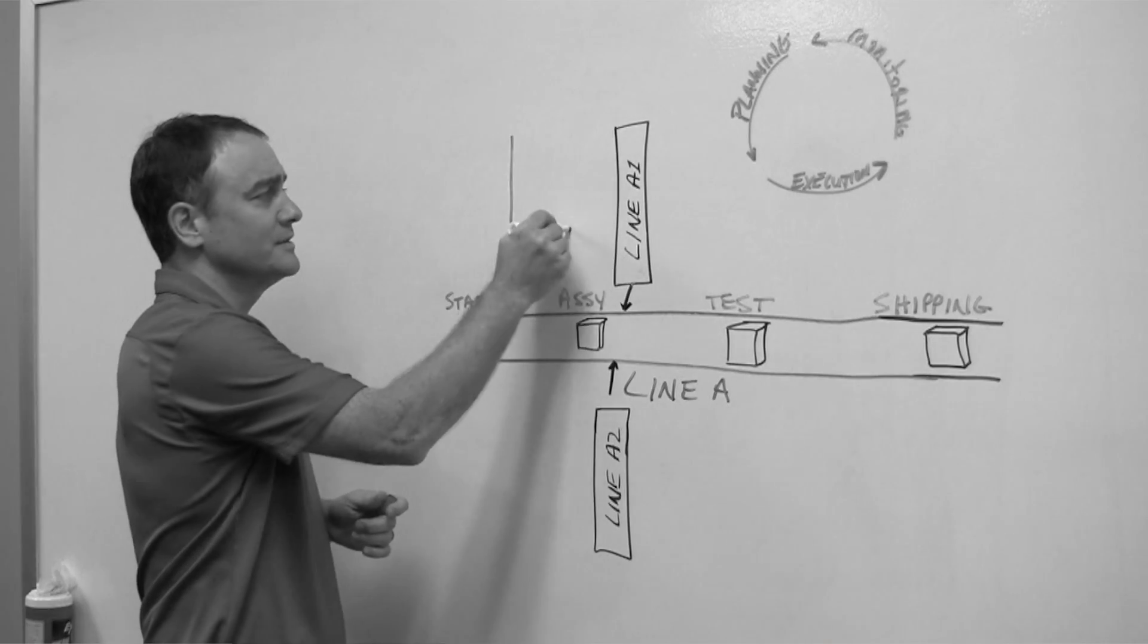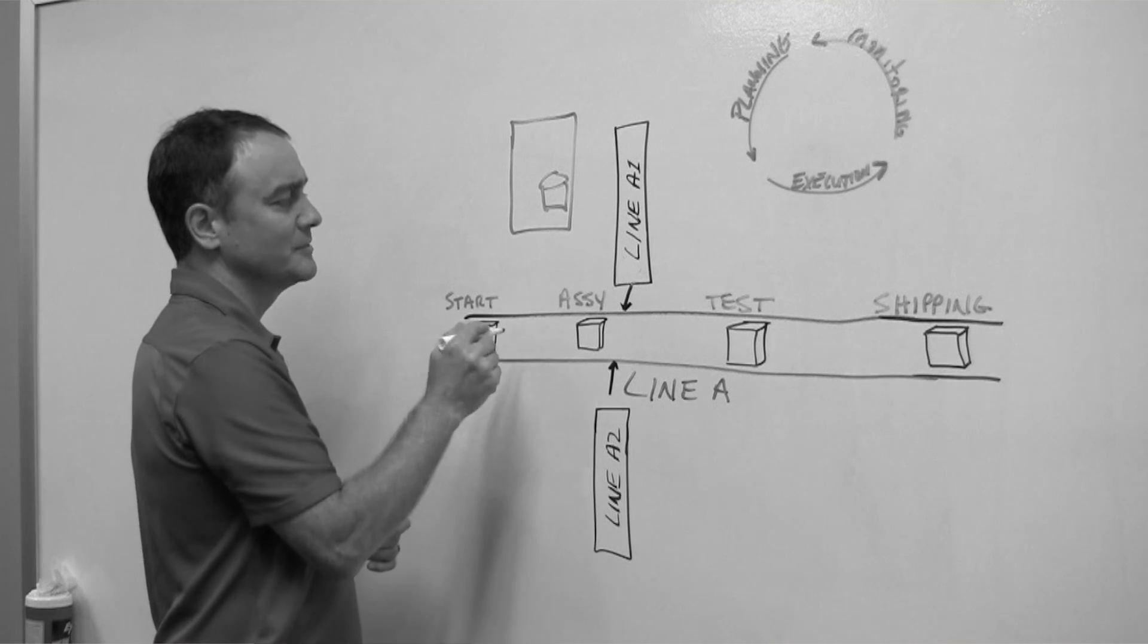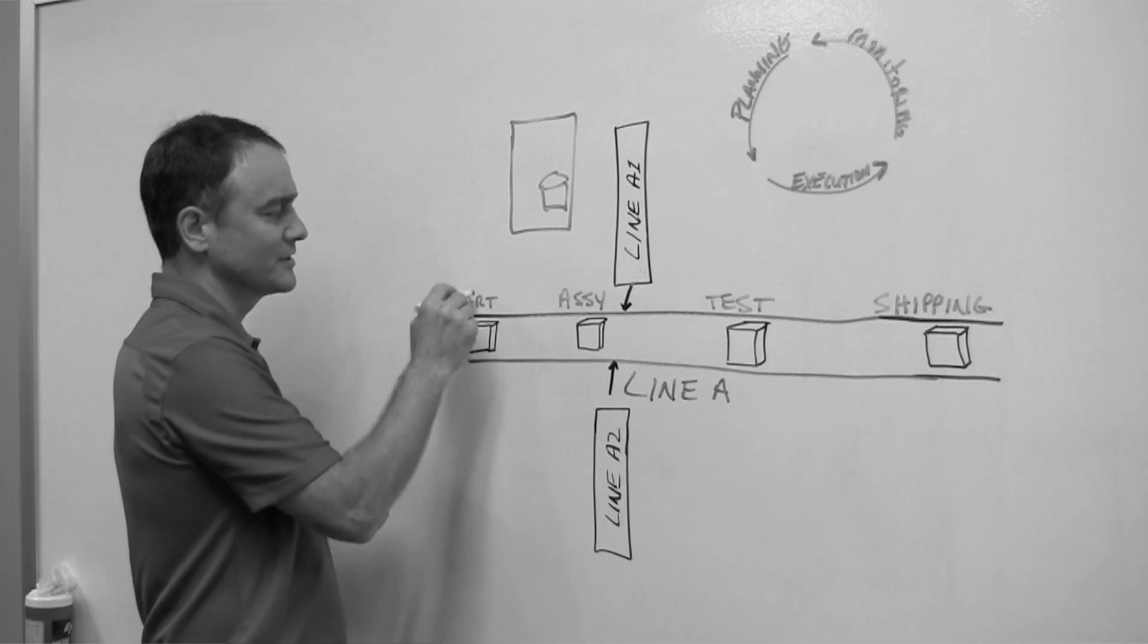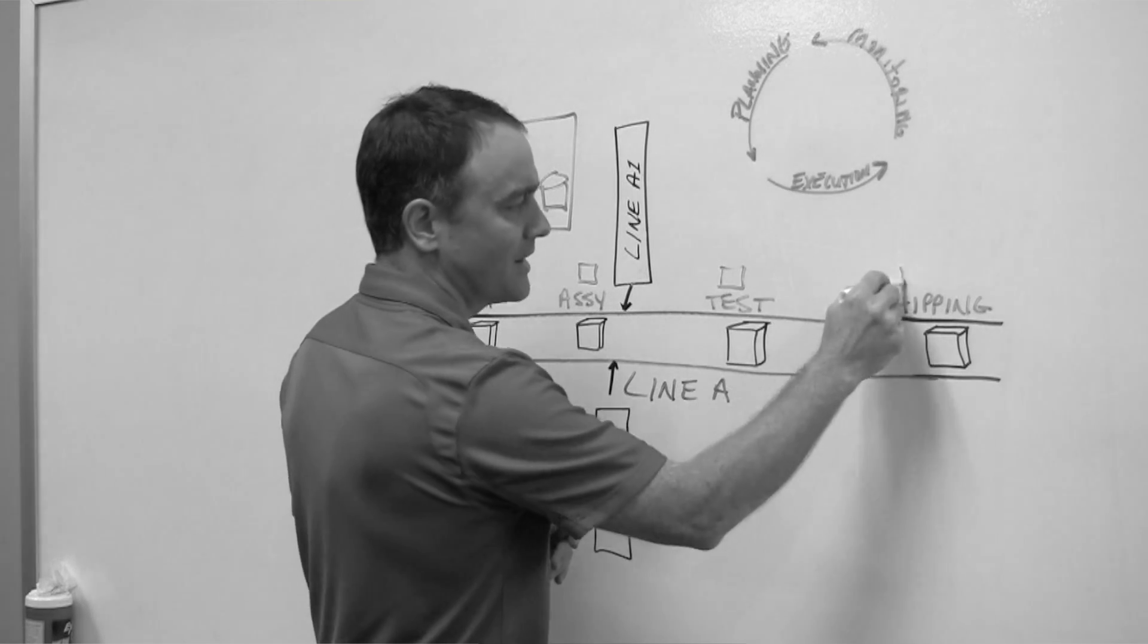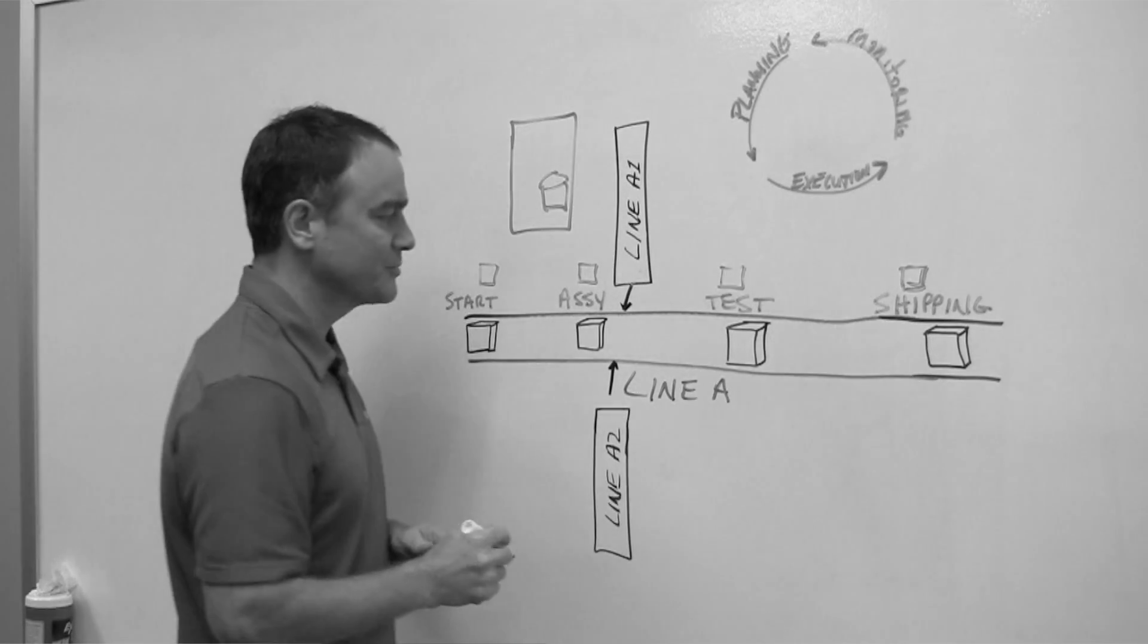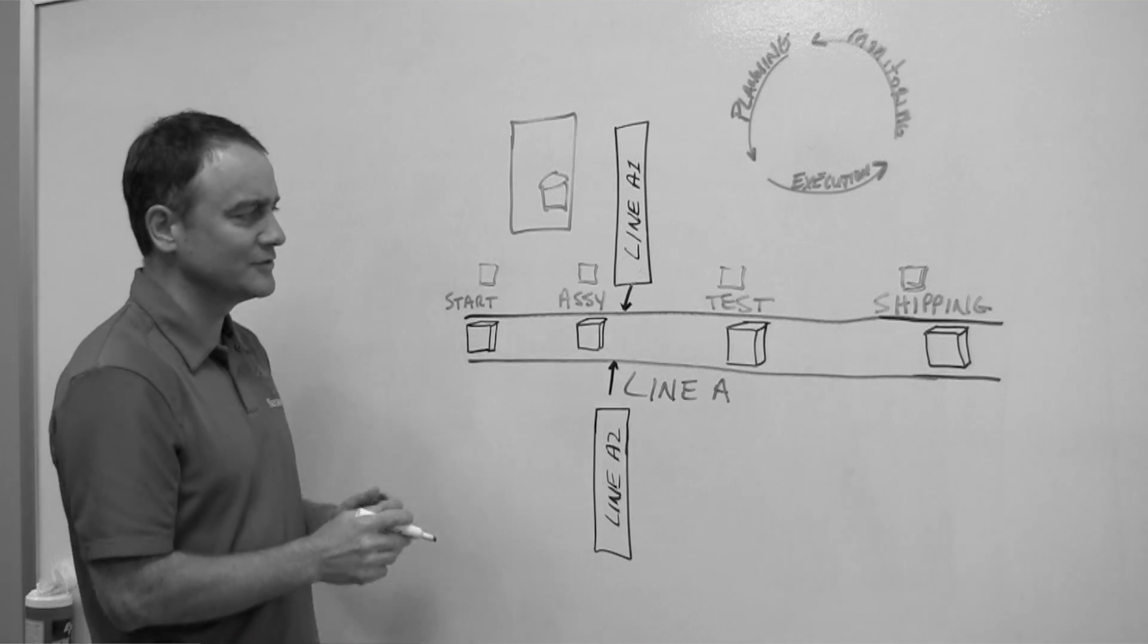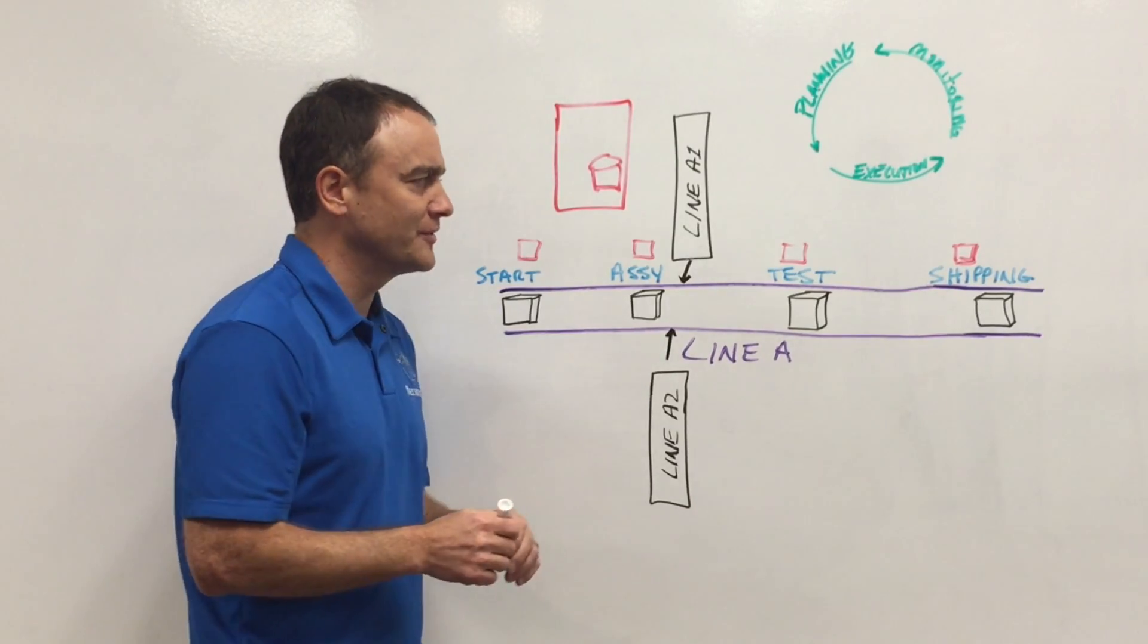So I'm going to draw just a server up here. A server is probably going to have a database in it. It's going to have connectivity out to the line. There's going to be usually some sort of an MES terminal along the line somewhere that an operator can interface with the system. There's probably other things tied into this MES system, automation, and barcode scanners, and printers, and things like that.